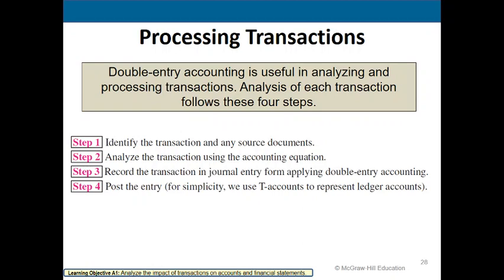When processing transactions, you must understand double entry accounting. You identify the transaction, analyze its effect on the accounting equation, and record it in a journal entry. Double entry accounting means any particular transaction is going to affect at least two accounts — normally a debit and a corresponding credit to two different accounts, though more than two accounts can be involved.